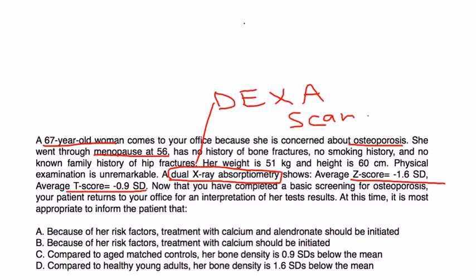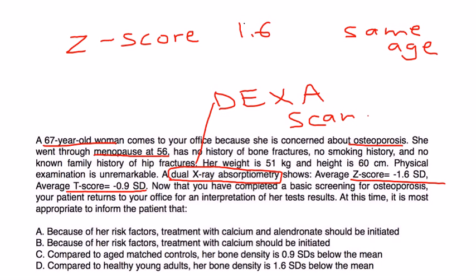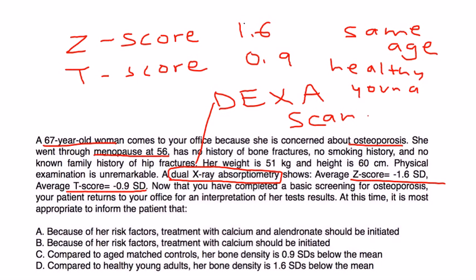The patient returns for interpretation of test results. Her Z-score is 1.6, which compares her bone density to people of the same age. Her T-score is 0.9, comparing her bone density to healthy young adults. Neither result makes her osteoporotic — to be osteoporotic you need a T-score less than minus 2.5 and a Z-score less than or equal to minus 2.0. Her results do not show osteoporosis.